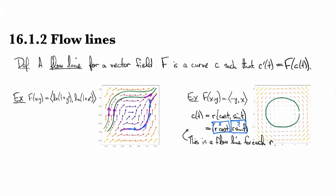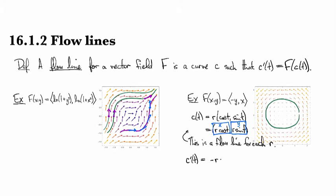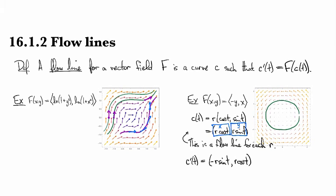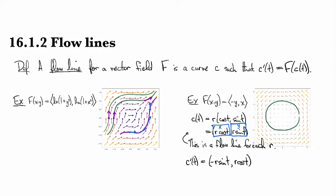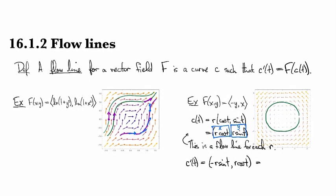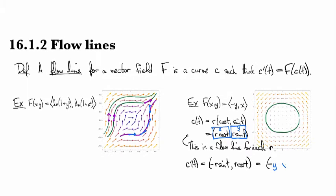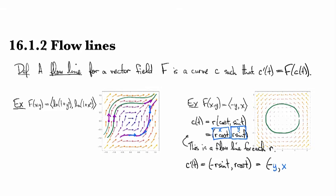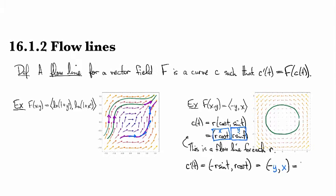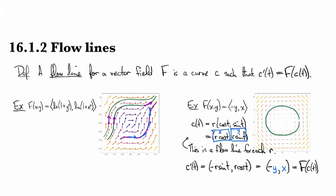When we look at the derivative we have minus r sine t and we have r cosine t, just by differentiating each coordinate. And then if you look at it you realize that this is equal to negative the blue y that we found up above and then the x. So this is exactly what F assigns to the point at the time that you're passing through.